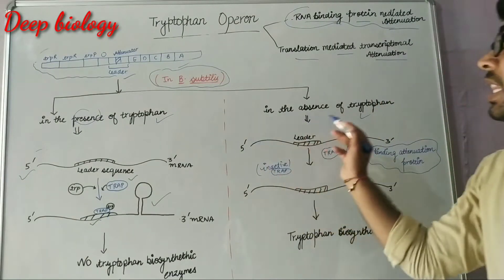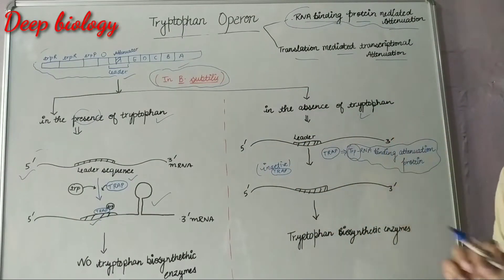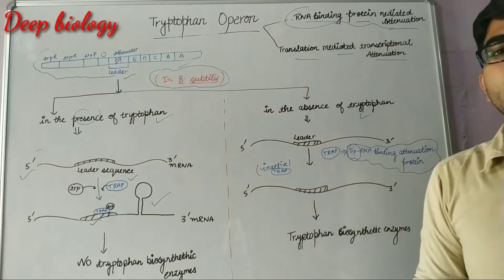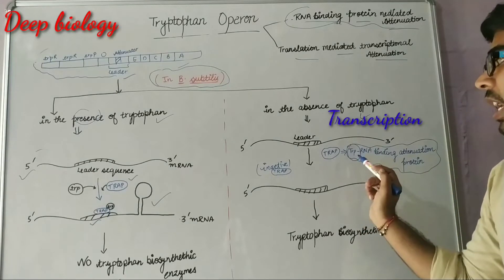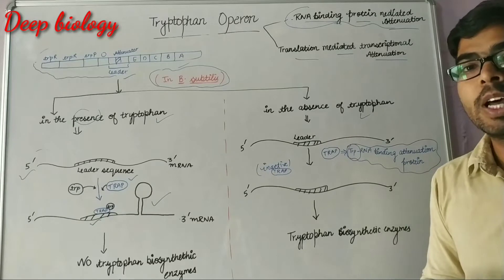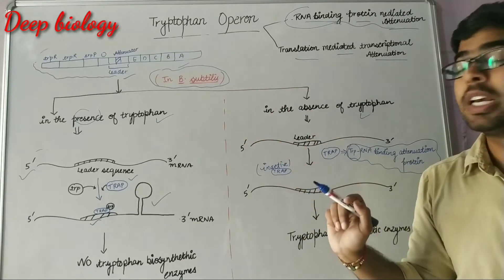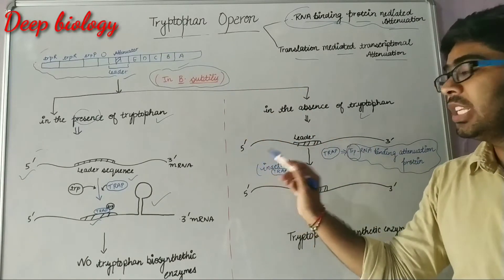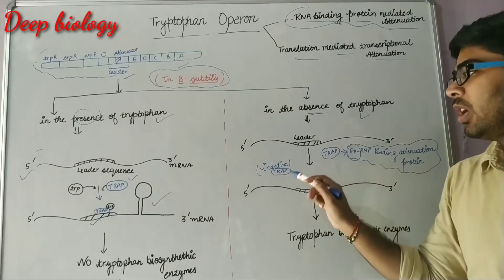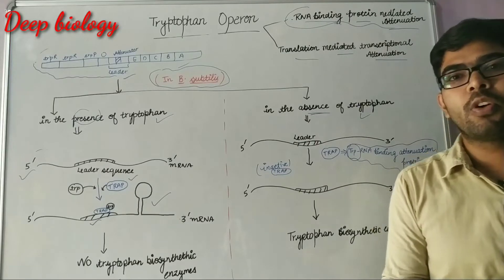In the absence of tryptophan, the mRNA is produced by the RNA polymerase. Then there is presence of TRAP protein in the cytoplasm of B. subtilis but there is no tryptophan found. This TRAP protein is in inactive form.